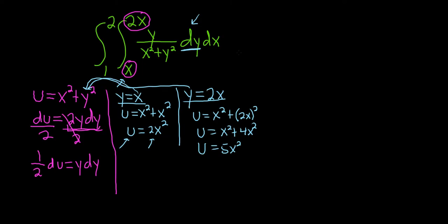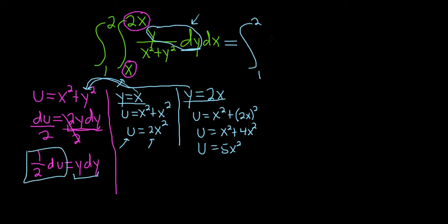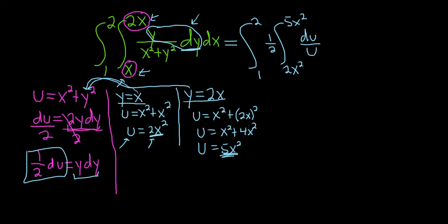Now let's make the substitution. We have our outer integral from 1 to 2. y dy gets replaced with 1/2 du, so we pull out the 1/2. The inner integral now goes from 2x squared to 5x squared. And y dy over u becomes du over u. So we have the integral from 1 to 2 of 1/2 times the integral from 2x squared to 5x squared of du over u, dx.